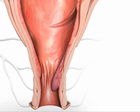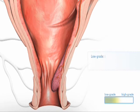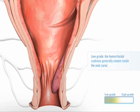However, for the purposes of this DVD, we simply refer to the low and high grades of hemorrhoids. Low corresponds to grade one and grade two of the Goliger classification — those stages of the disease where the hemorrhoidal cushions generally remain inside the anal canal.